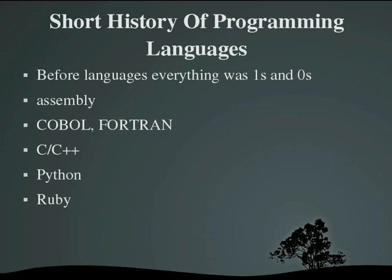A short history of programming languages. When it all first started out, everything was just ones and zeros. You had to just flip a bunch of switches — that was your whole program. It was horrible to debug. Then it got a little bit better, and along came assembly. You had words like 'move' and similar commands that would translate into ones and zeros by a program called an assembler.